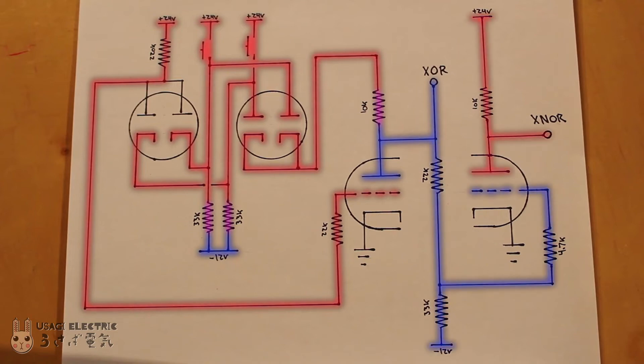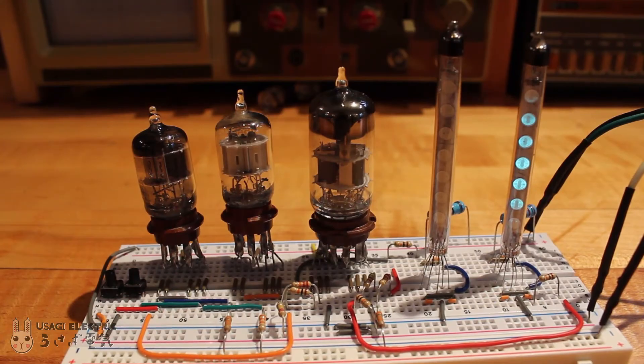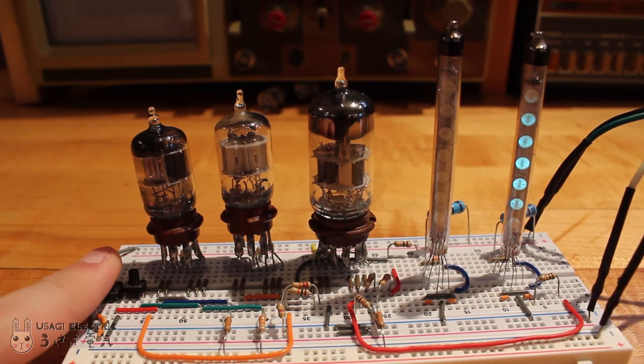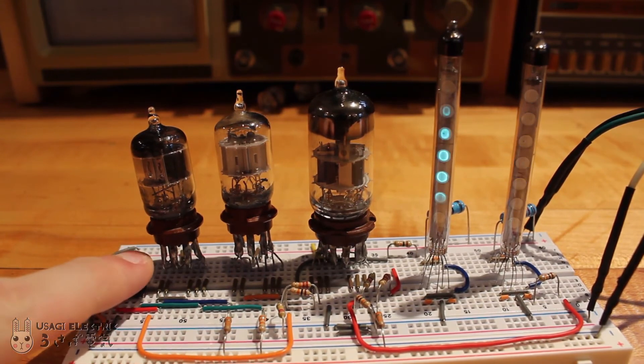The right triode is an inverter for the exclusive NOR. The left VFD represents the exclusive OR output and the right VFD represents the exclusive NOR output.